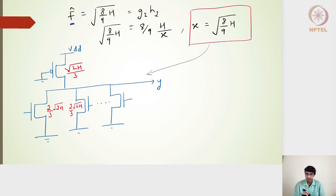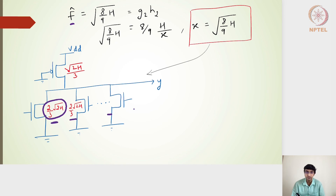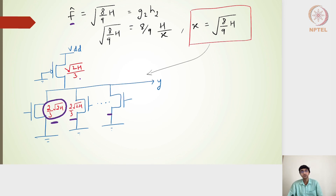Going back to confirm: x = √(8h/9) = (2/3)·√(2h). The individual NMOS pull-down transistor sizes are 2/3·√(2h), and the always-on PMOS transistor size is that value divided by 2, which is √(2h)/3. This gives us the identified sizes for the pseudo-NMOS k-input NOR gate that achieve the best delay.